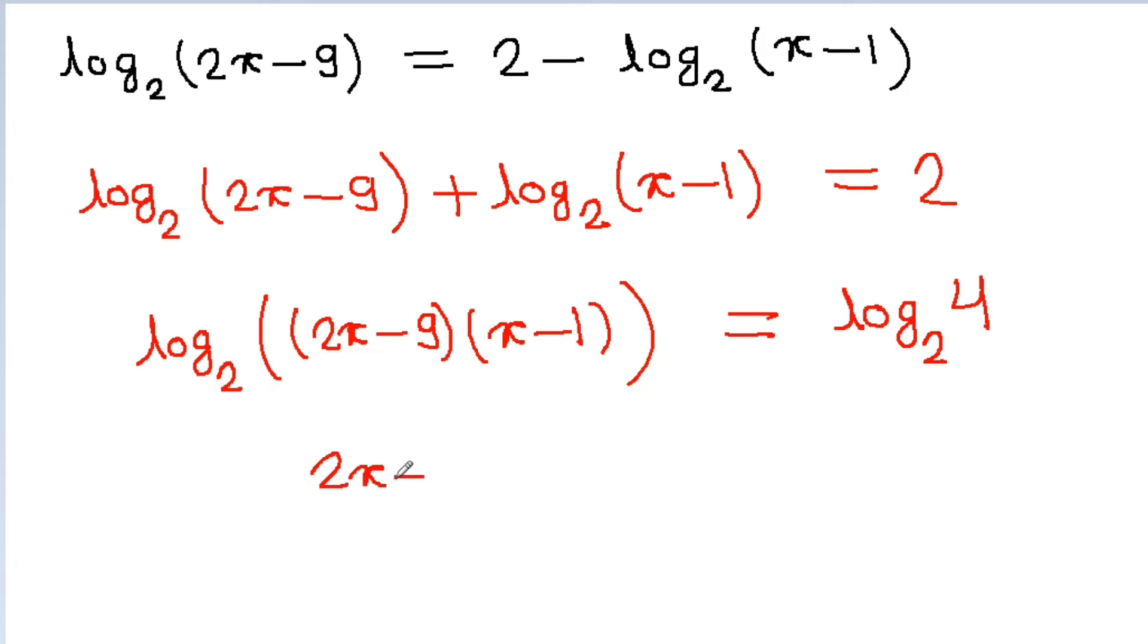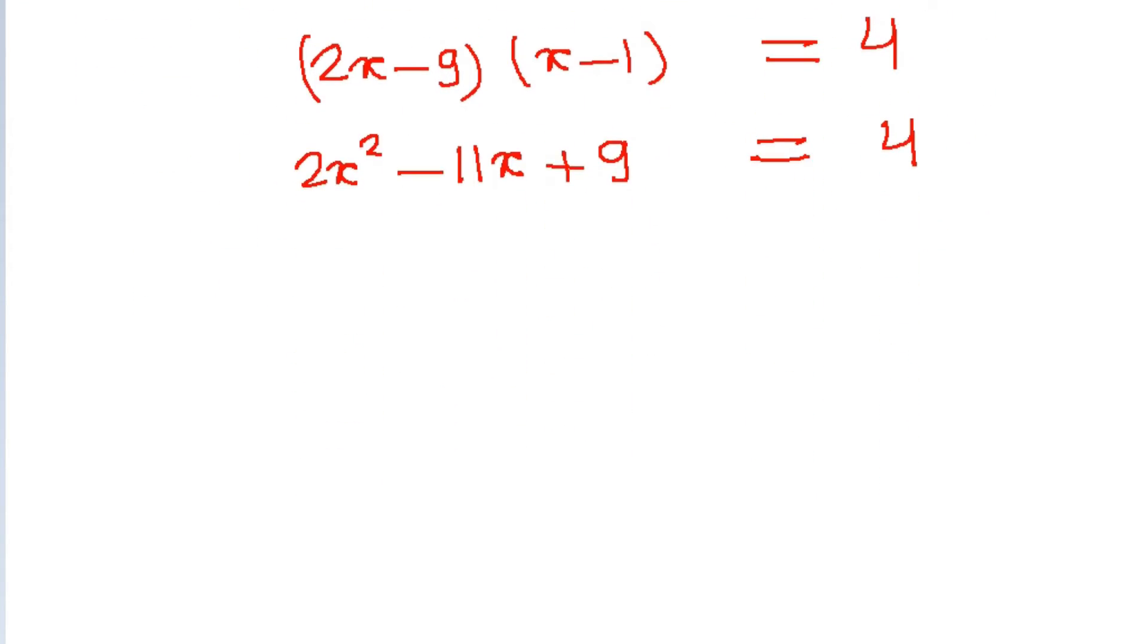From here, we get (2x-9) times (x-1) equals 4. Now if we multiply 2x-9 and x-1, we get 2x² minus 11x plus 9 equals 4, which gives us 2x² minus 11x plus 5 equals 0.